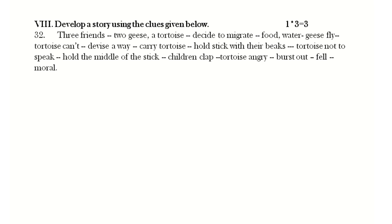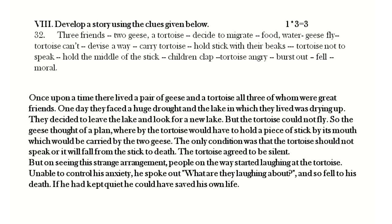Once upon a time there lived a pair of geese and a tortoise — all three were great friends. One day they faced a huge drought and the lake in which they lived was drying up. They decided to leave and look for a new lake, but the tortoise could not fly. The geese thought of a plan whereby the tortoise would hold a piece of stick by its mouth, carried by the two geese. The only condition was that the tortoise should not speak or it would fall to death. The tortoise agreed, but on seeing this strange arrangement people on the way started laughing. Unable to control his anxiety, he spoke out asking what they were laughing about, and fell to his death. If he had kept quiet, he could have saved his own life.